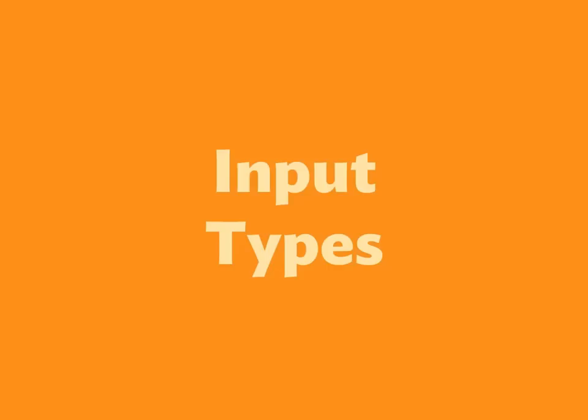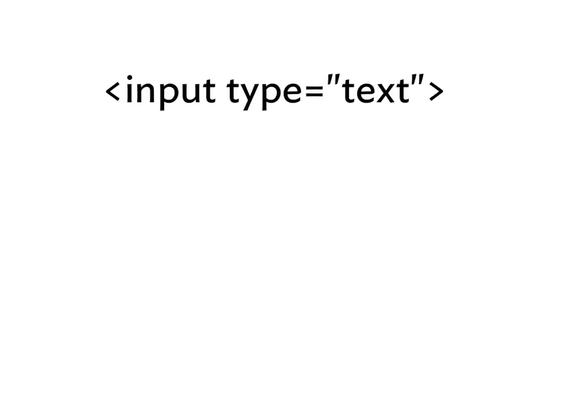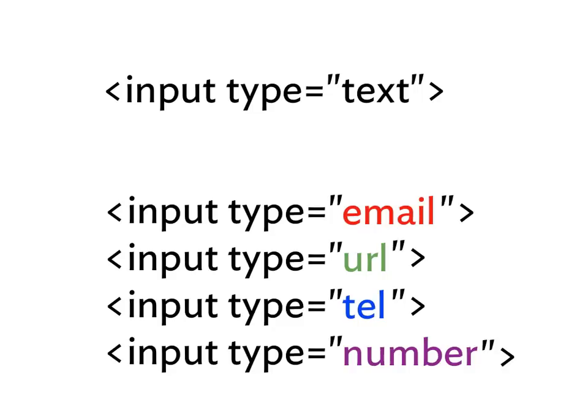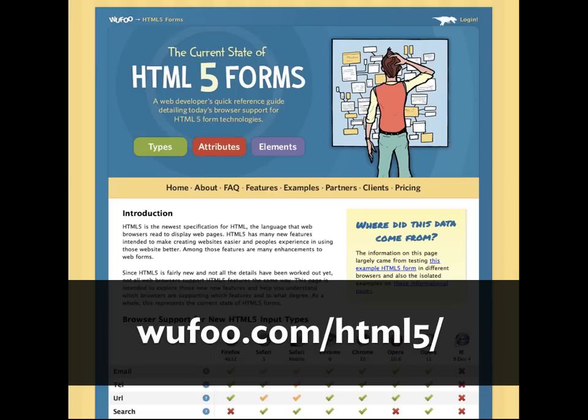Let's think about input types — one of the things that makes up HTML5 forms. In HTML4 or XHTML, we had input type='text' and used it for all kinds of stuff: first name, last name, social security number, anything that was a word or a sentence. Email, URLs, telephone numbers, numbers of any kind — all collected with type='text'. Now those are new types, so we can be more semantic and tell an input exactly what kind of information it will collect.